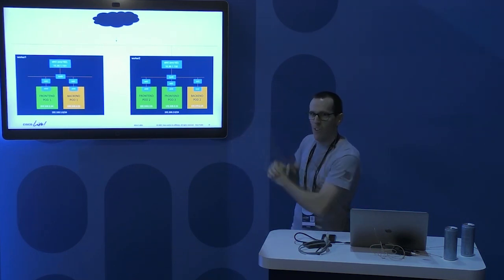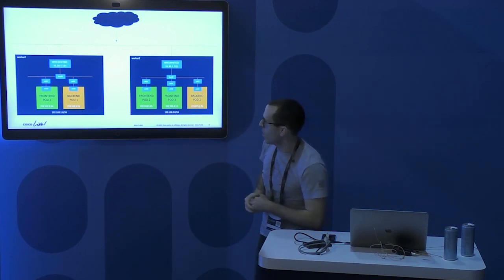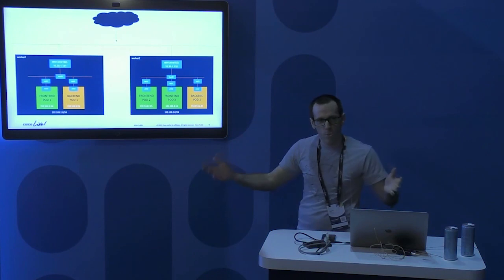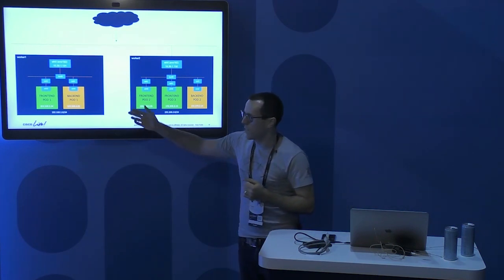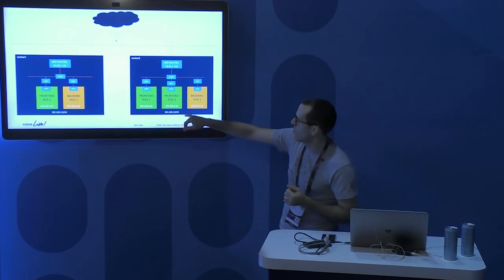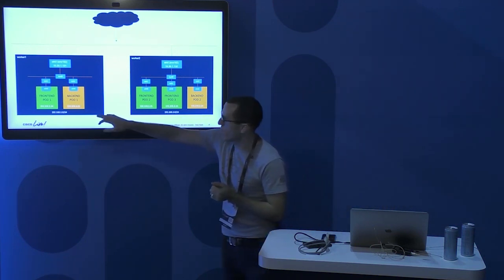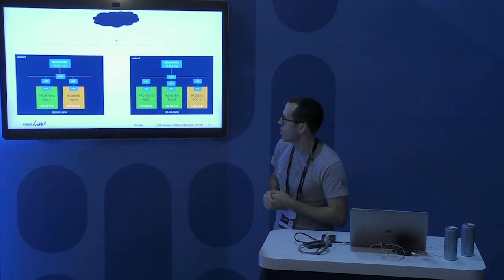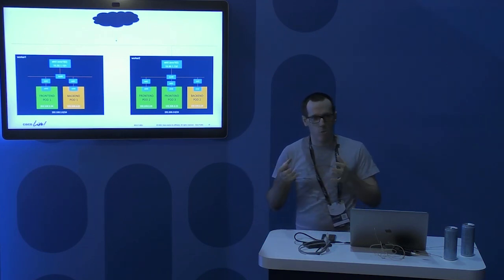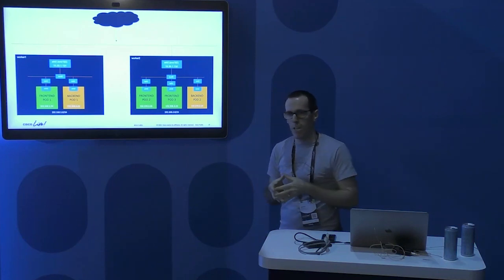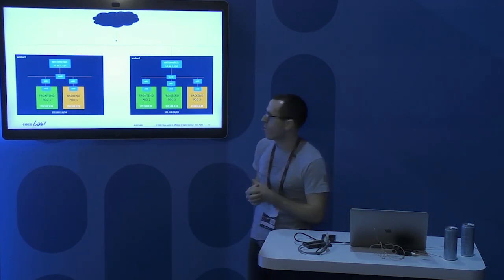We have a couple of front end pods and a couple of back end pods across two worker nodes. Each worker node in Kubernetes gets its own subnet — 192.168.1.0 and 2.0. Every pod gets its own IP address from this subnet: front end pod 192.168.1.24, front end pod 2 at 192.168.2.15. All containers within a Kubernetes pod share that networking namespace, share that IP address, and communicate on localhost along with the port they've exposed.